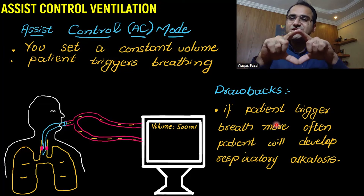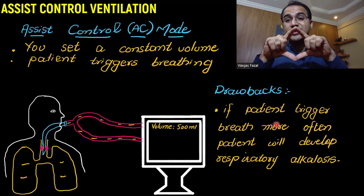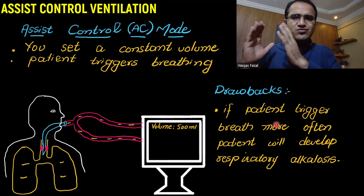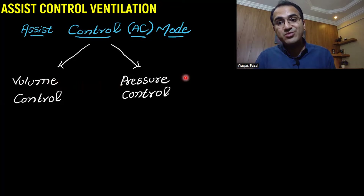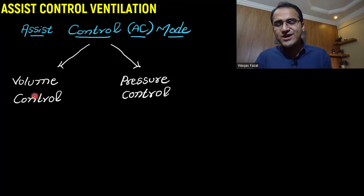A simple way to remember: whichever mode has the word 'control' in it — assist control, controlled mandatory ventilation — the major control of ventilation is with the ventilator. In AC mode, you can either set volume control or pressure control. Usually volume control is preferred, but in some patients you may go for pressure control.